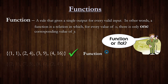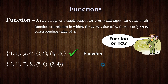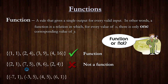Let's look at another example. Notice this first point and this last point both have an x value of 2, but in the first point the corresponding y value is 1, and in the last point it's 4. That means an x value of 2 corresponds to two different y values, which breaks our rule for being a function. So this is not a function.